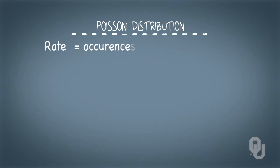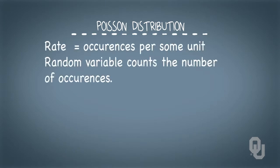Again, the rate is occurrence per some unit, and the random variable counts the number of occurrences. The independence of occurrences is assumed. Seeing one occurrence doesn't affect the likelihood of another occurrence.